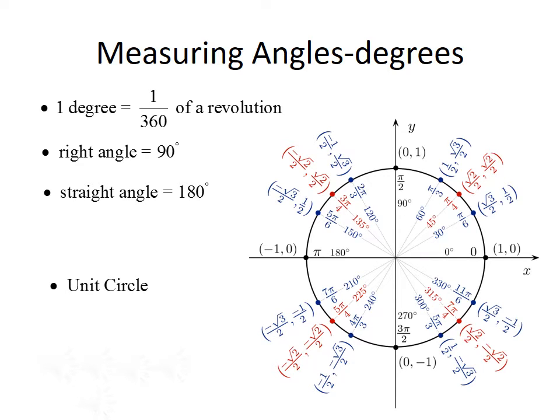Oftentimes in trigonometry, we'll refer to something called the unit circle. The unit circle is pictured here — basically, it's a circle that represents the different angles throughout the rotation. At the top of the circle we have our 90-degree right angle, and on the left-hand side we have a 180-degree straight angle. We also have 30, 45, 60, 120, 135, and 150 degrees in between those angles. This represents some of the common angles that we're going to use in trigonometry.